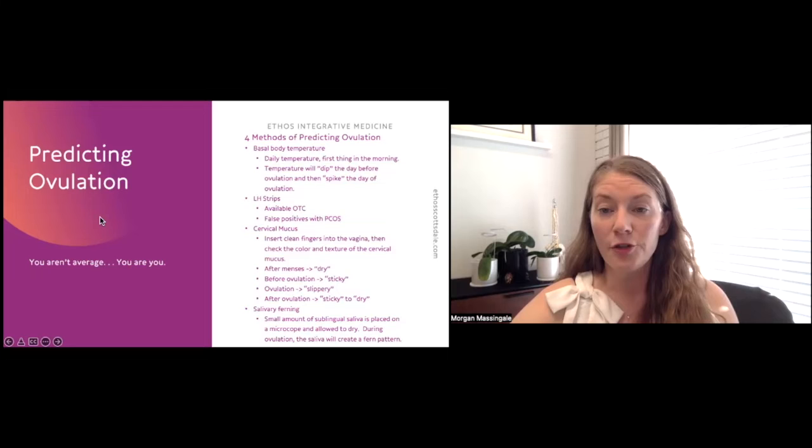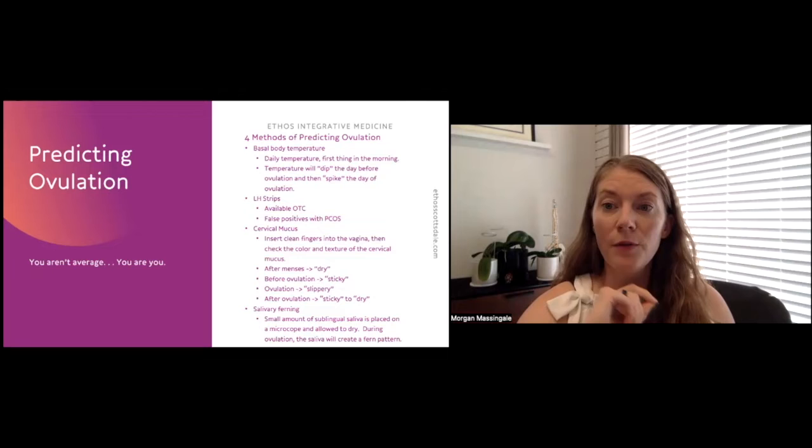LH strips are another reliable method of predicting ovulation. You are, they are small strips that are very similar to an at-home pregnancy test, using a little bit of first thing in the morning urine. It's able to measure if you're having that LH surge. So the luteinizing hormone surge that actually causes the release of an egg.